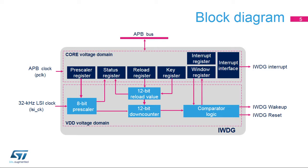A programmable 8-bit prescaler is used to divide the LSI oscillator frequency. The 12-bit down-counter defines the timeout value. The comparator logic is used for the window function and for the interrupt generation.